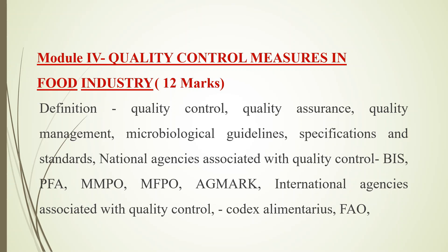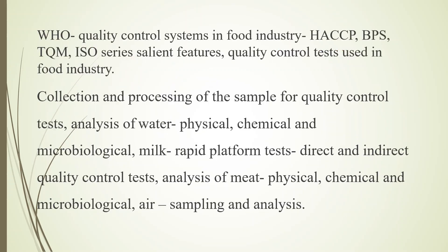Then, National Agencies Associated with Quality Control: BIS, PFA, MMPO, MFPO, and Ag Mark. International Agencies Associated with Quality Control: Codex Alimentarius, FAO, WHO. Quality Control Systems in Food Industry: HACCP, BPS, TQM, ISO series. Salient features and quality control tests used in food industry.